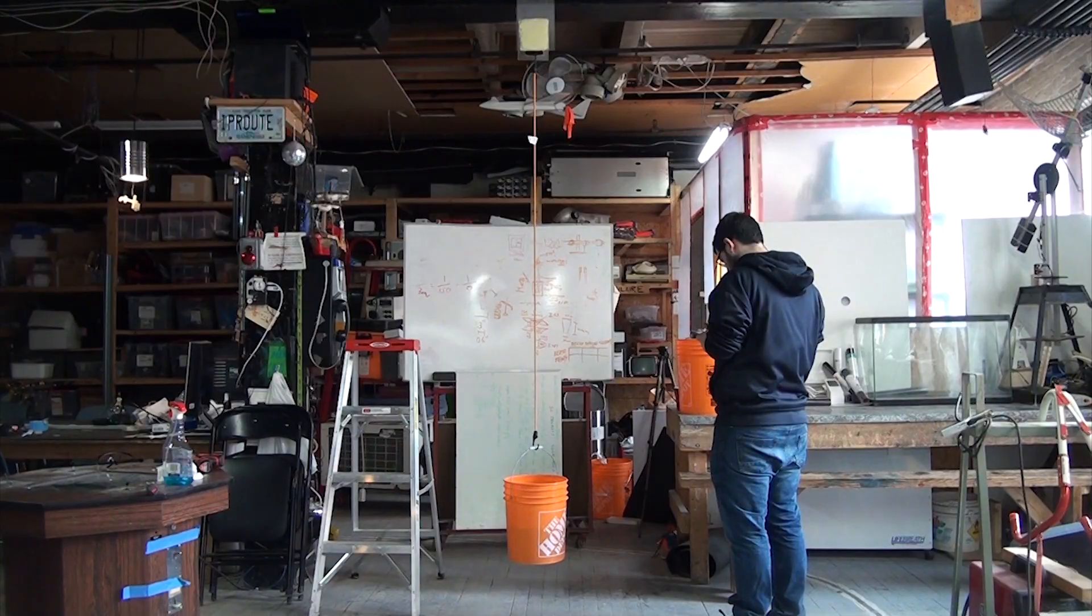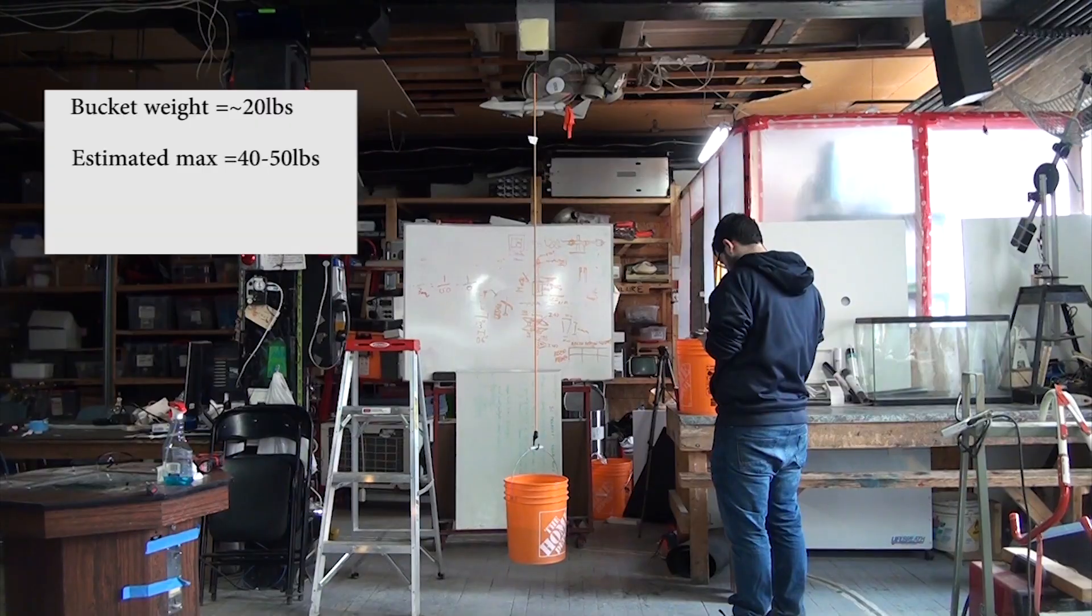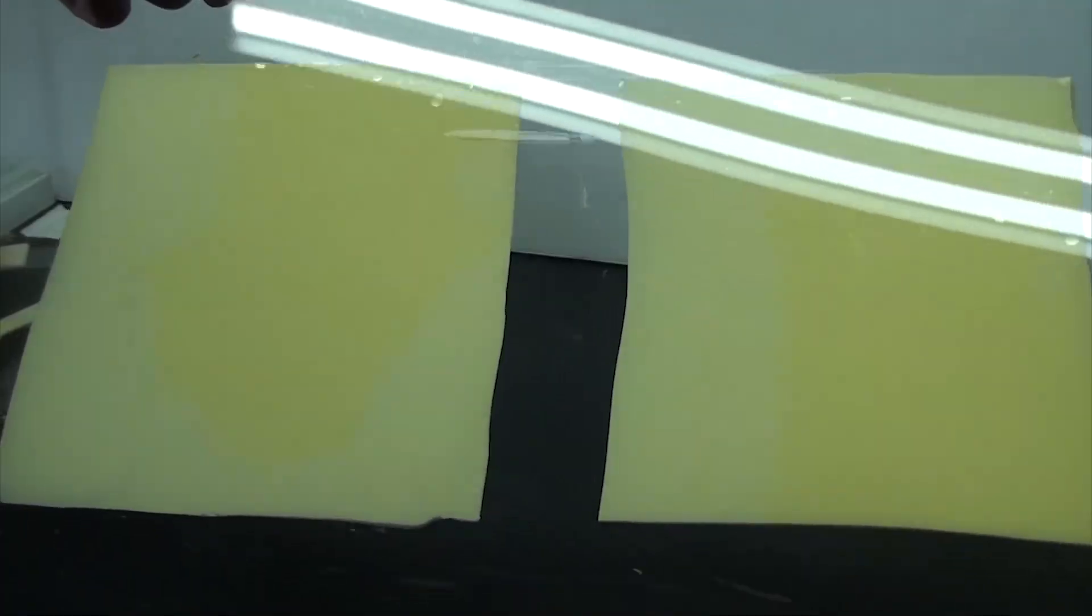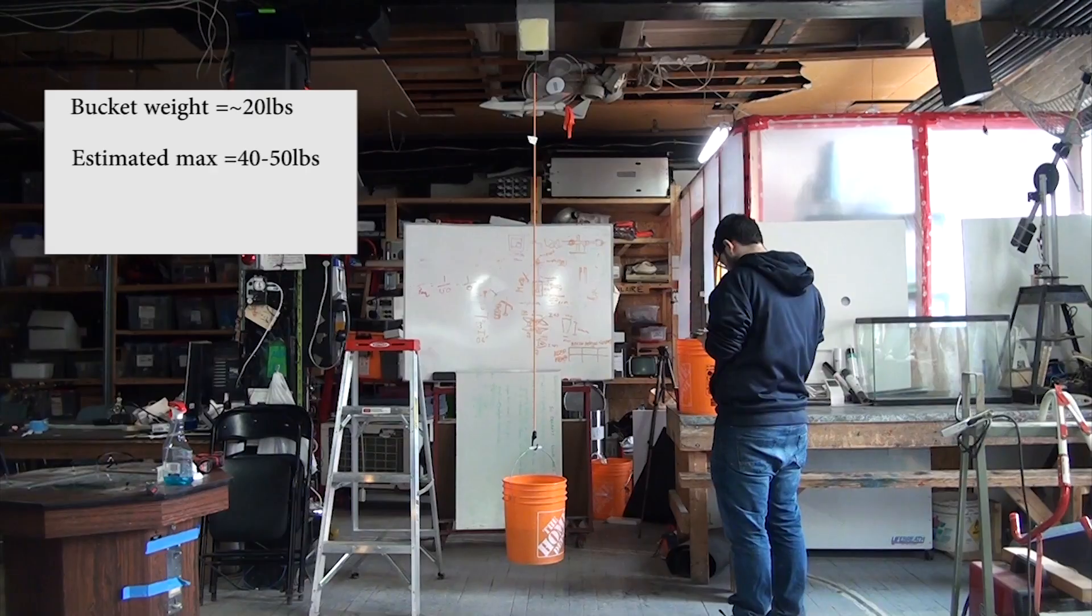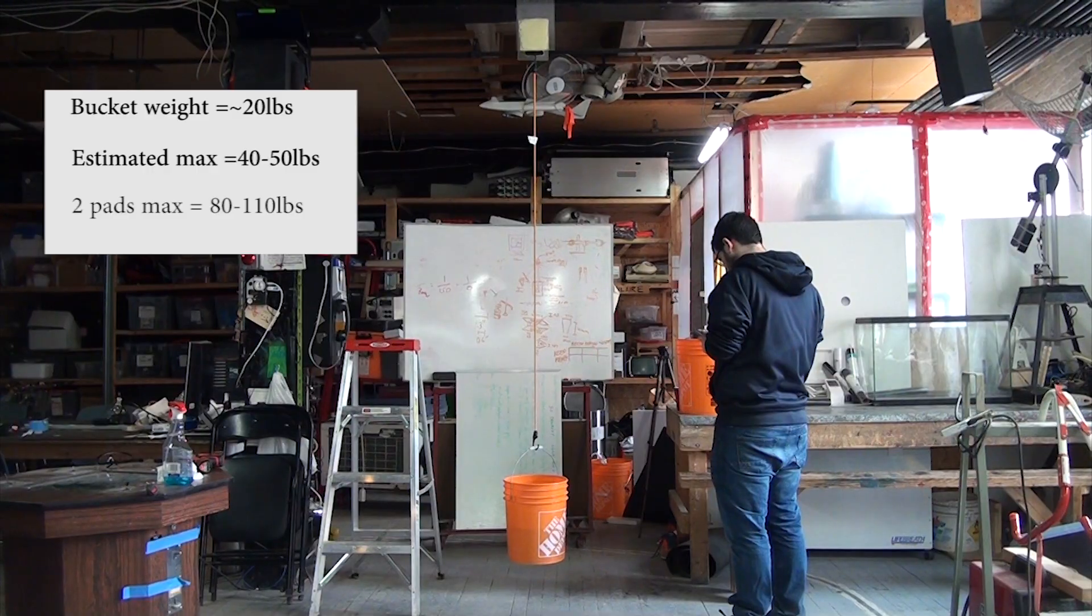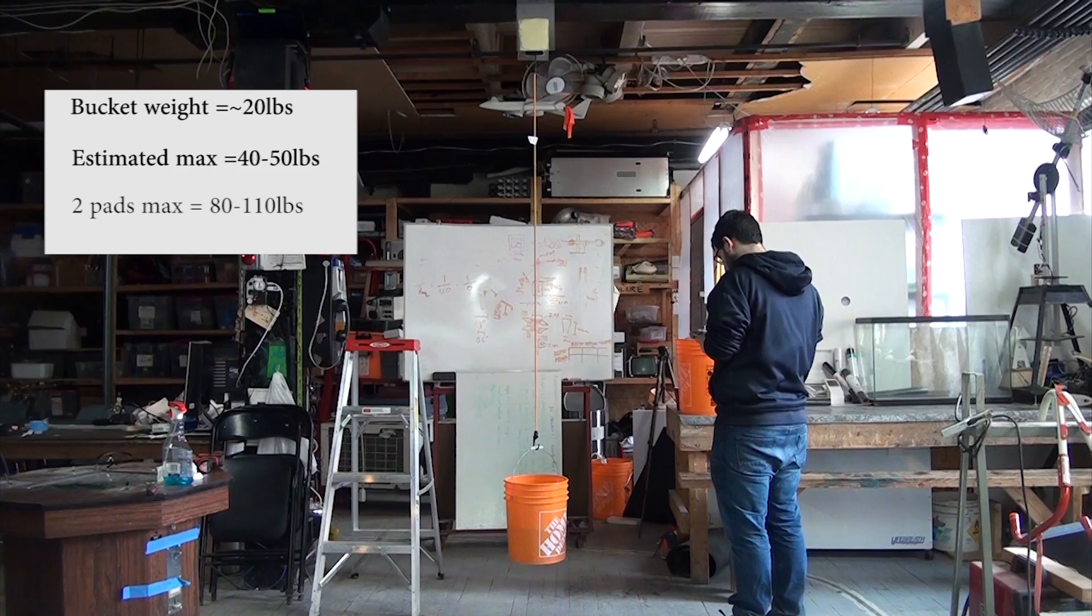I estimate, and keep in mind this is super back of the envelope stuff, that a full pad worth of contact could at least double the bucket weight. So let's say 40 to 50 pounds, if not a little more. It was way stickier when it was on the plastic it was cast on, but evidently either the acrylic or the pad itself was a bit wonky. So under ideal conditions, more akin to the second test, I estimate two pads would probably hold 100 to maybe 115 pounds.